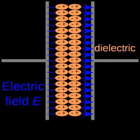In the classical approach to the dielectric model, a material is made up of atoms. Each atom consists of a cloud of negative charge, electrons bound to and surrounding a positive point charge at its center. In the presence of an electric field the charge cloud is distorted, as shown in the top right of the figure. This can be reduced to a simple dipole using the superposition principle.